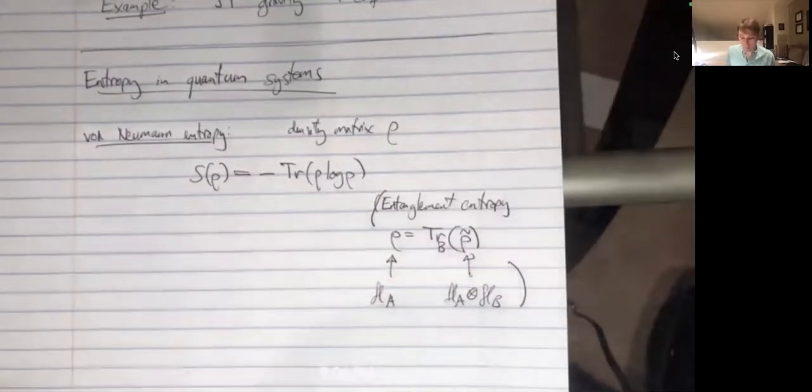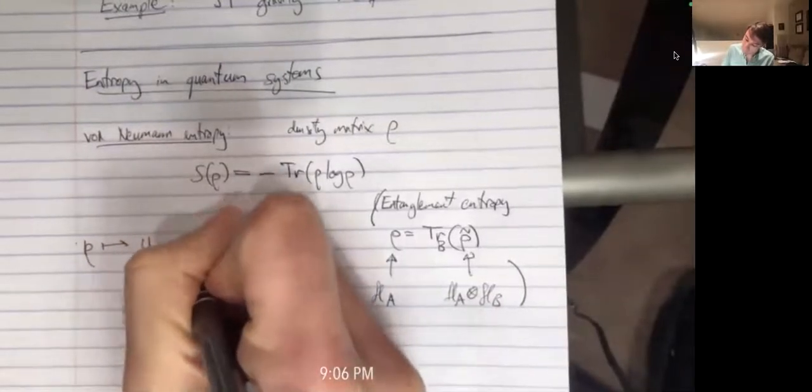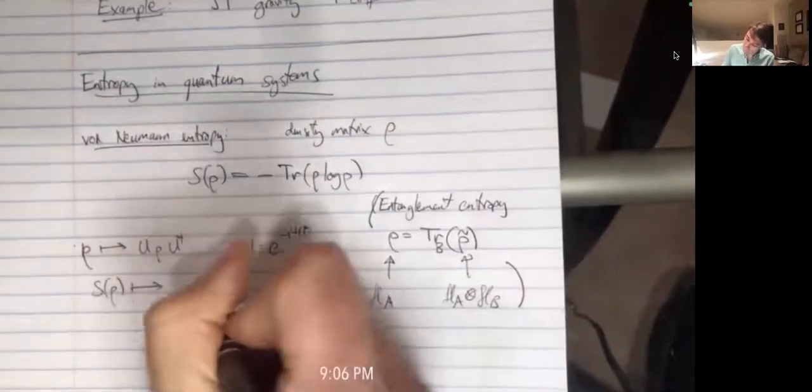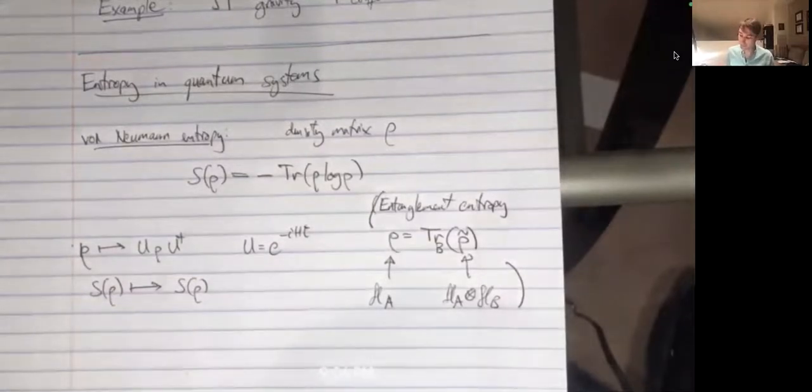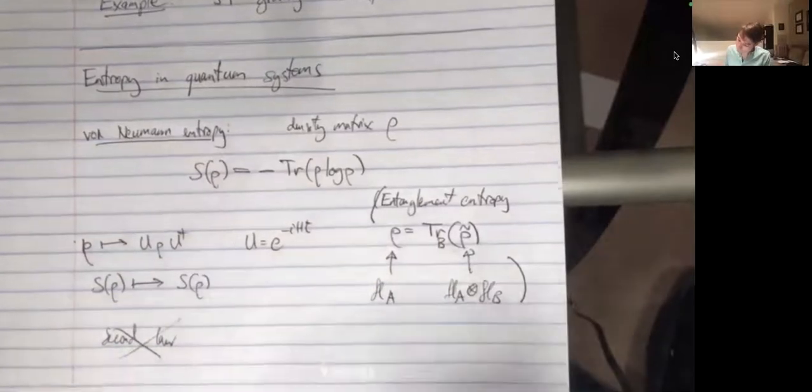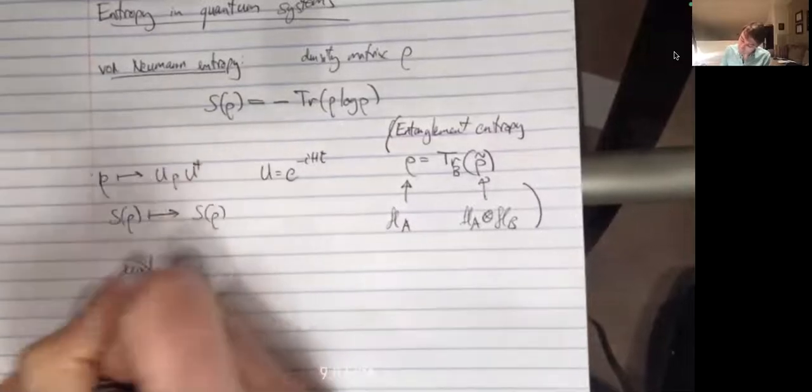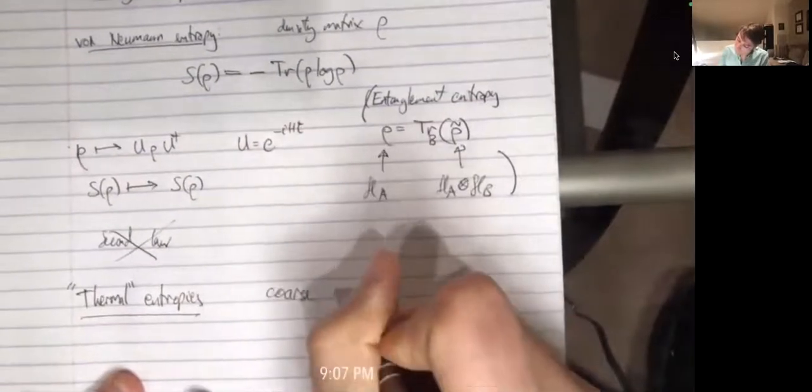This is not the first type of entropy we meet — we're more familiar with thermodynamic entropy. The von Neumann entropy can't be a thermodynamic entropy because in particular, if we do time evolution, rho goes to U rho U-dagger, then the von Neumann entropy is unitarily invariant, so it can't possibly be the sort of entropy that appears in the second law. There's no second law for this sort of entropy. So we also need to talk about thermal entropies, which are defined by defining some coarse graining.